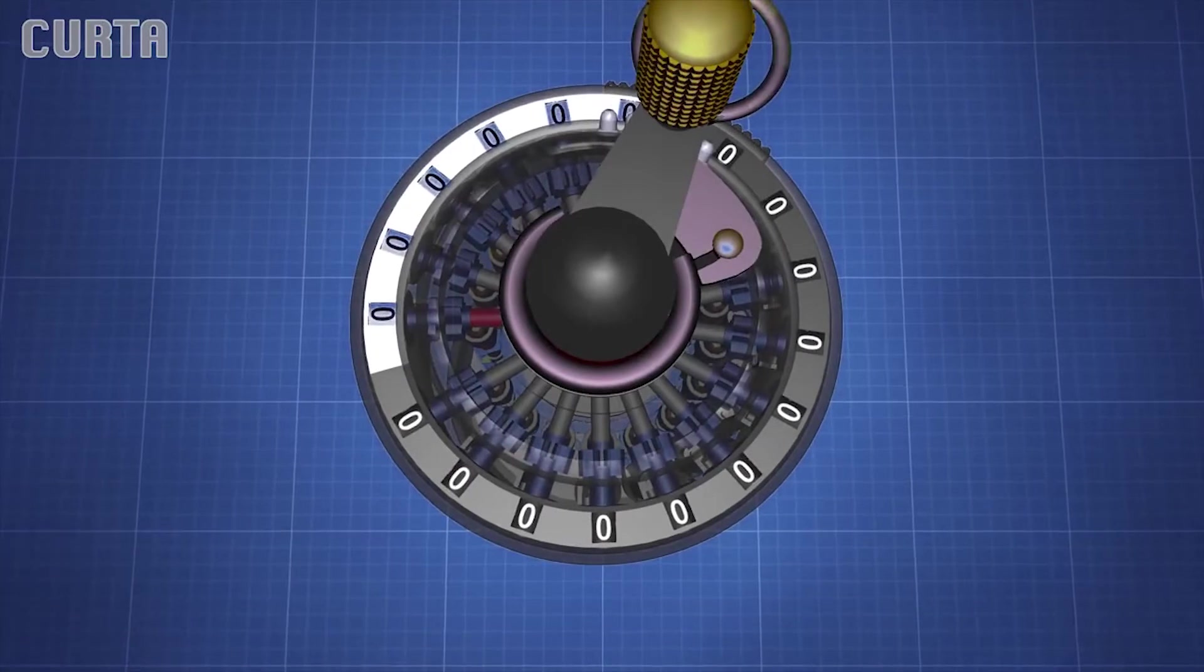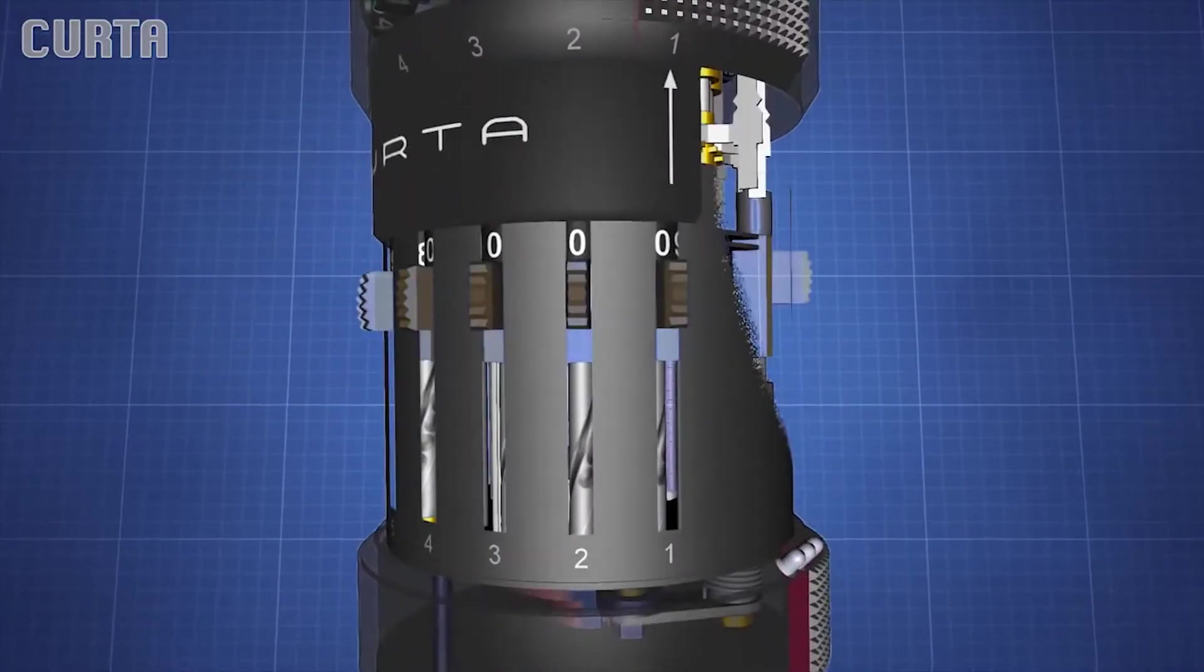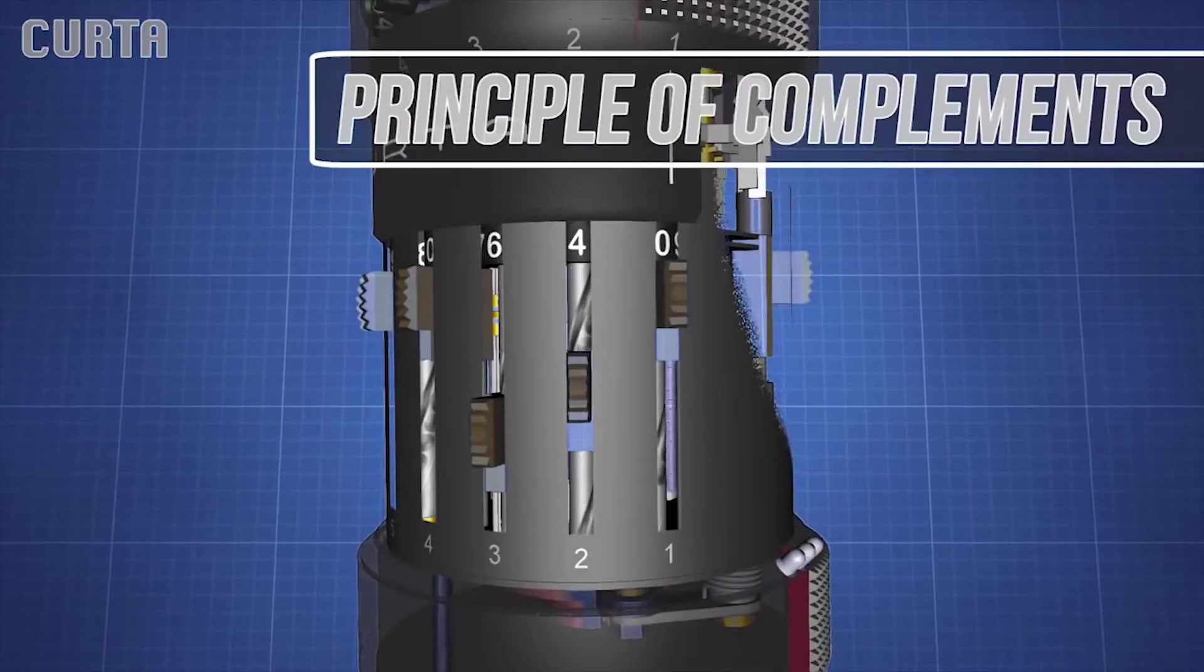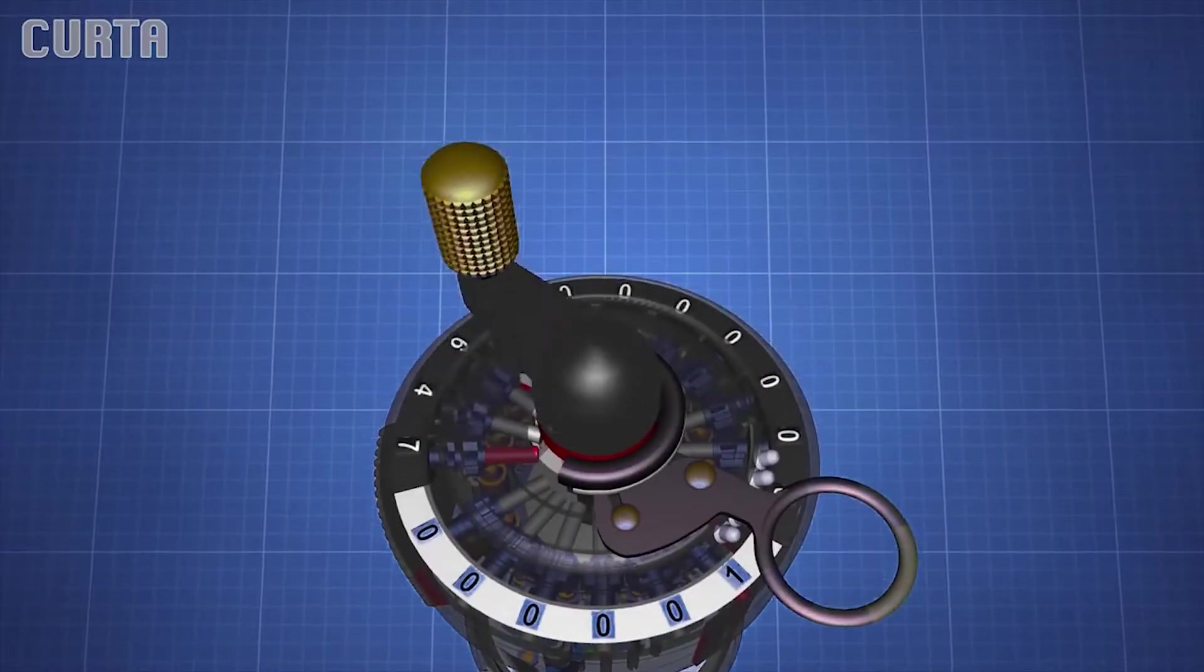He wanted the device to do simple arithmetic, but was running into trouble working out the mechanics to every operation. So he decided to use the method of complements in his design, essentially allowing him to subtract using addition.